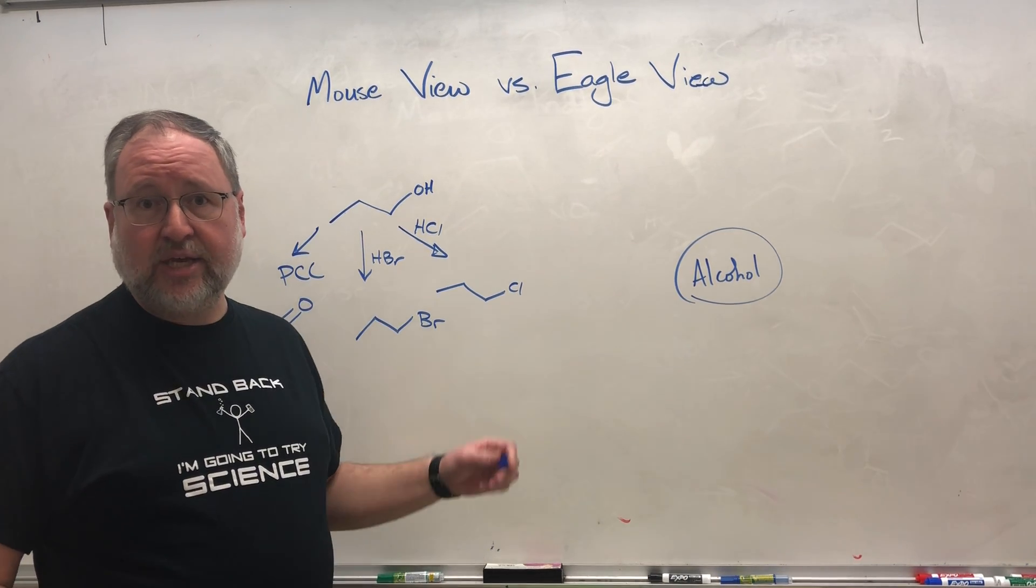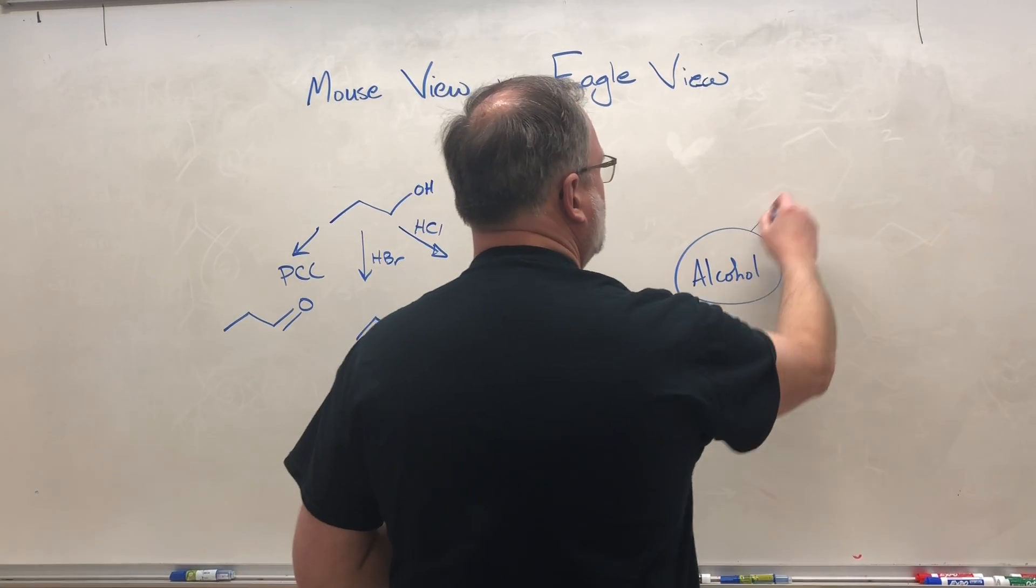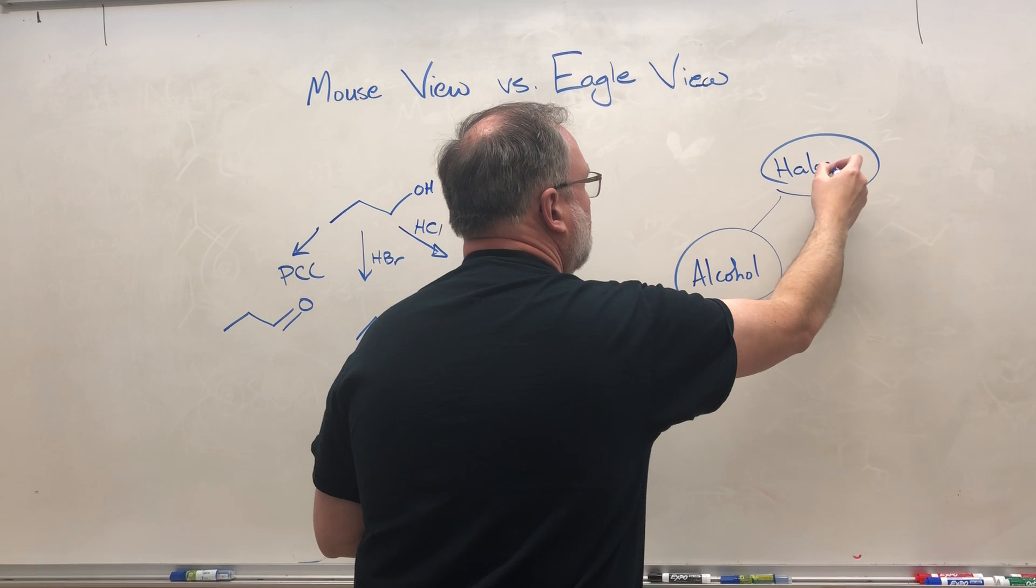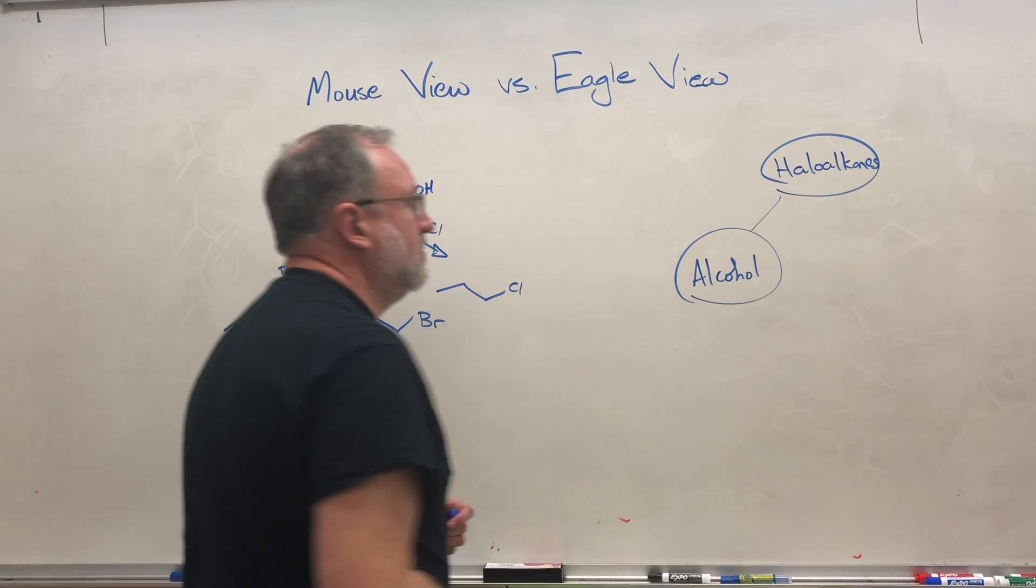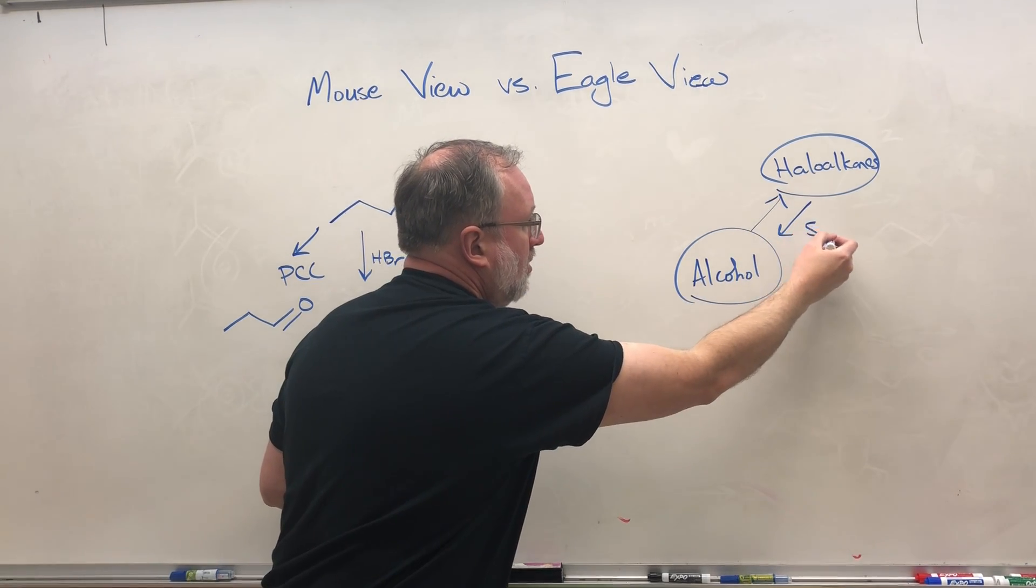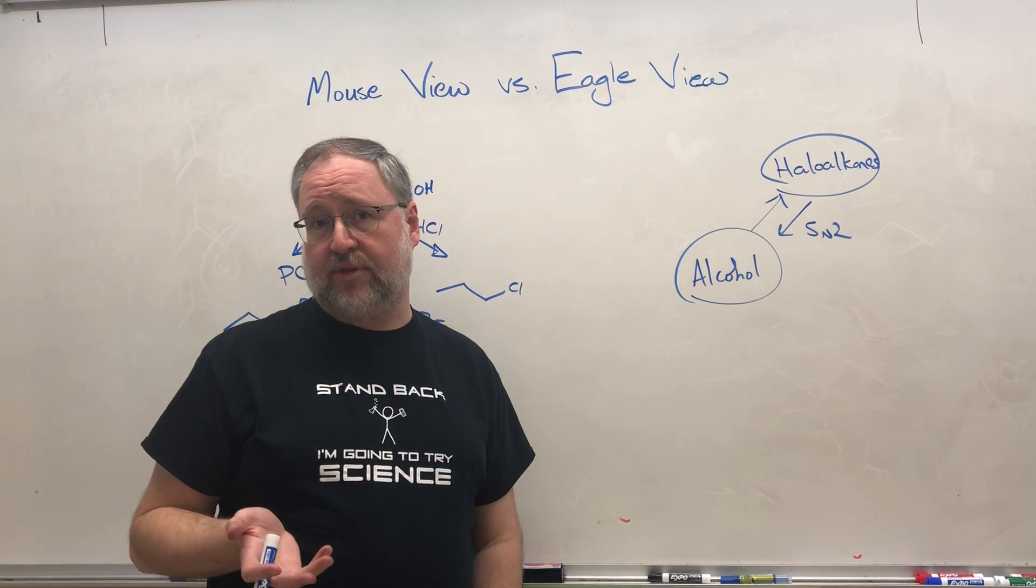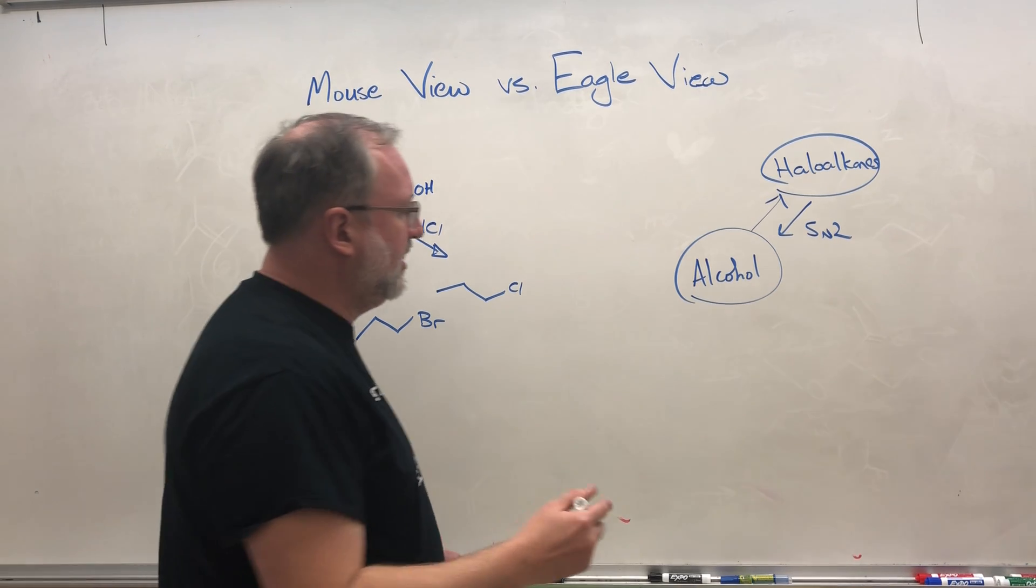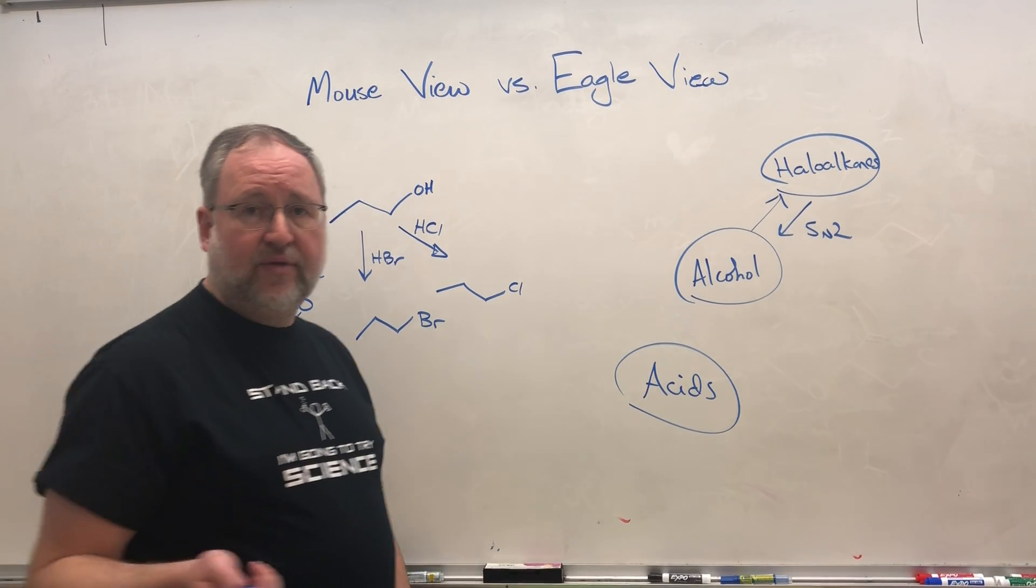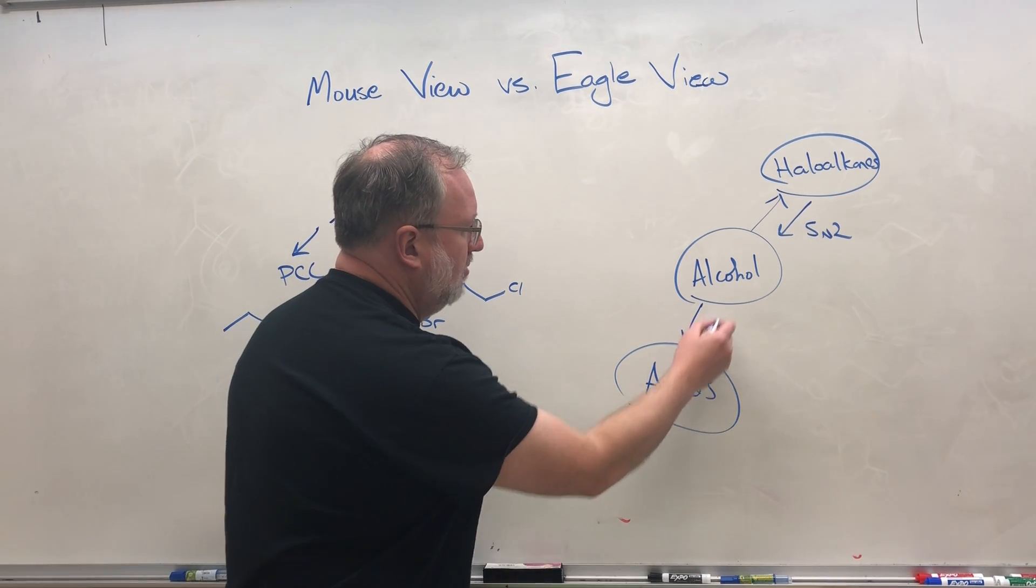In organic synthesis, the eagle view might look something like this. You might think about alcohols as a group and how are they connected to, for example, haloalkanes. Here's a case where oftentimes if you're talking about primary or secondary alcohols and haloalkanes, you can interconvert them using SN2. Or you might think about acids. If your alcohol is primary, you can convert it to an acid using oxidation and back with reduction.